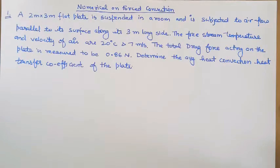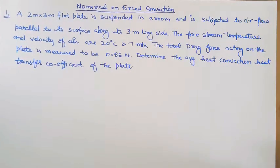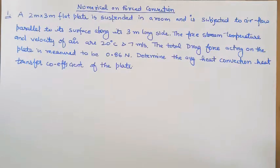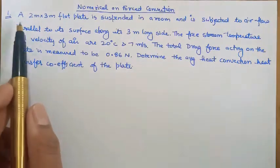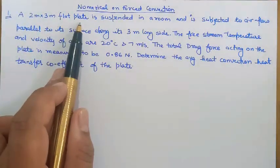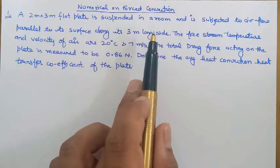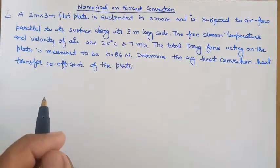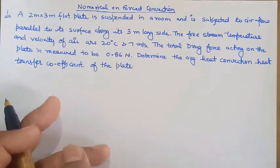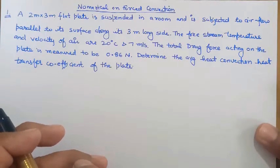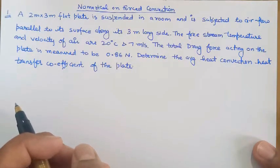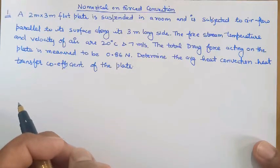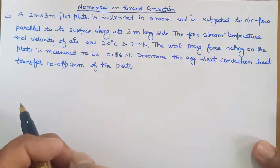Good morning to all. Today we will do the numericals based upon forced convection. The first numerical says that a 2 meter by 3 meter flat plate is suspended in a room and is subjected to air flow parallel to its surface along its 3 meter long side. The free stream temperature and velocity of air are 20 degree centigrade and 7 meter per second. The total drag acting on the plate is measured to be 0.86 newtons. Determine the average convective heat transfer coefficient of the plate.